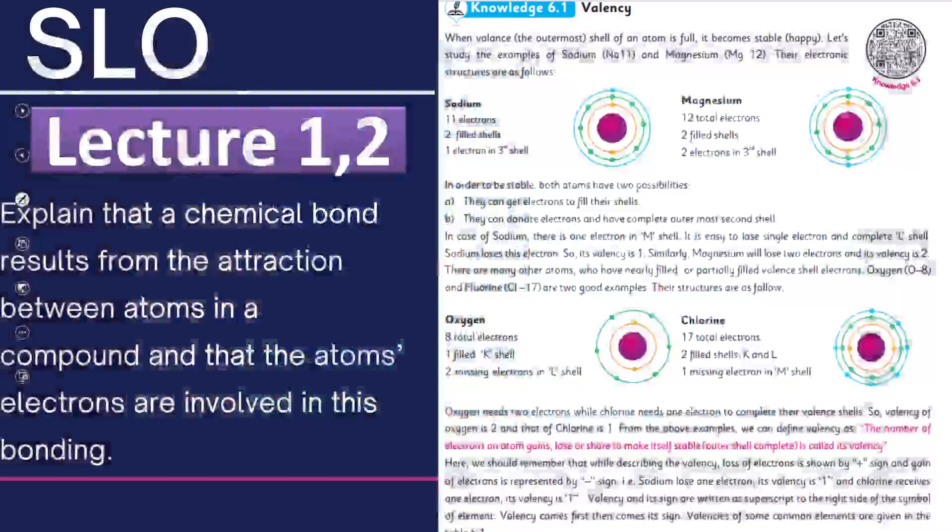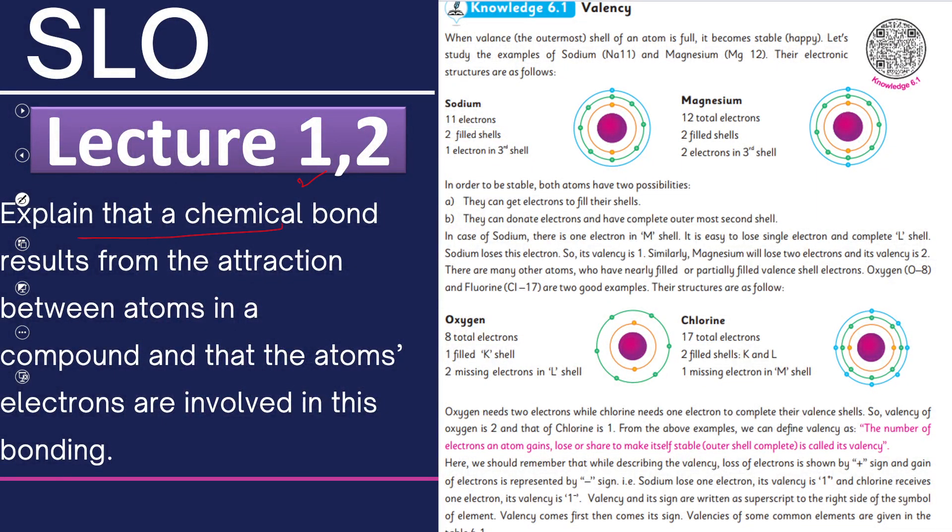We have lectures 1 and 2 that will cover this SLO, in which we will explain that chemical bonds are formed as a result of attraction between atoms in a compound, and the atoms' electrons are involved in this bonding.